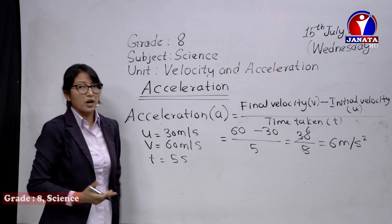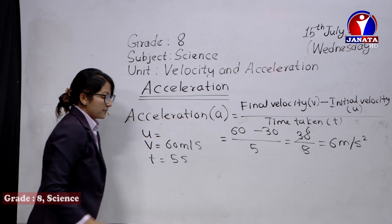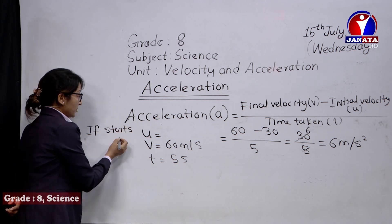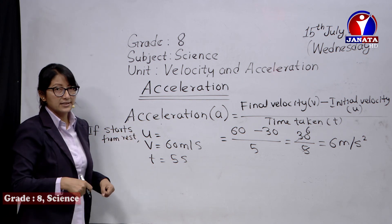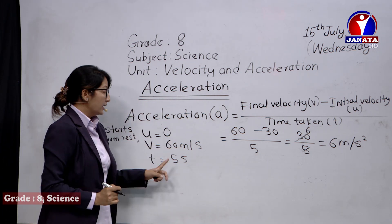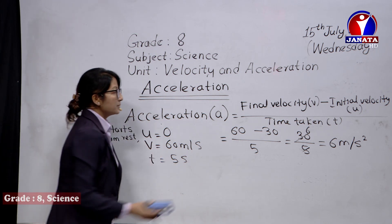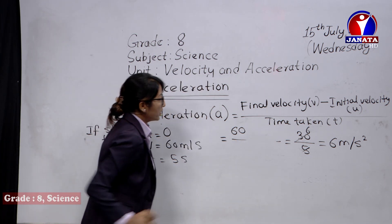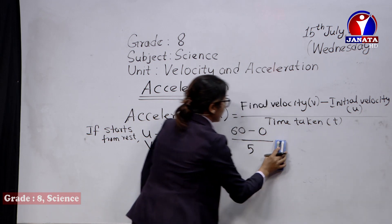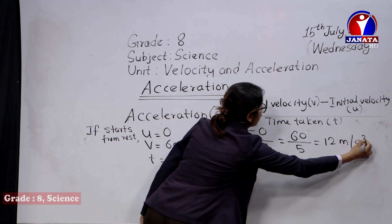Now, if the vehicle starts from rest, initial velocity u is zero. Suppose it accelerates and its final velocity reaches 60 meter per second in 5 seconds. Then a equals v minus u over t equals 60 minus 0 over 5 equals 60 over 5 equals 12 meter per second square. The velocity increased from zero to 60, so this is positive acceleration.